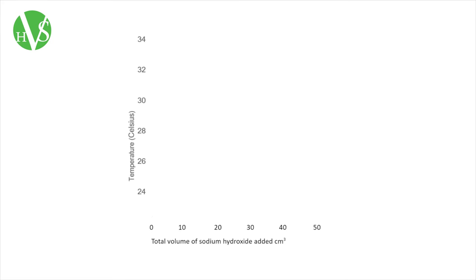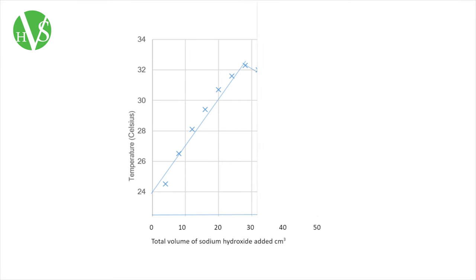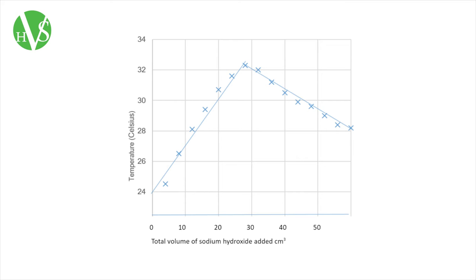As we increase the volume of sodium hydroxide, the maximum temperature reached increases. This is because as we increase the volume of sodium hydroxide, we increase the number of particles of sodium hydroxide which then react with hydrochloric acid more readily. Our results show that the maximum temperature reached 33 degrees Celsius on adding a volume of 30 cm³ of sodium hydroxide. However, beyond that volume, the maximum temperature begins to decrease. This is due to the fact that we have added so much sodium hydroxide that there is not enough hydrochloric acid to react with it, leaving some unreacted.